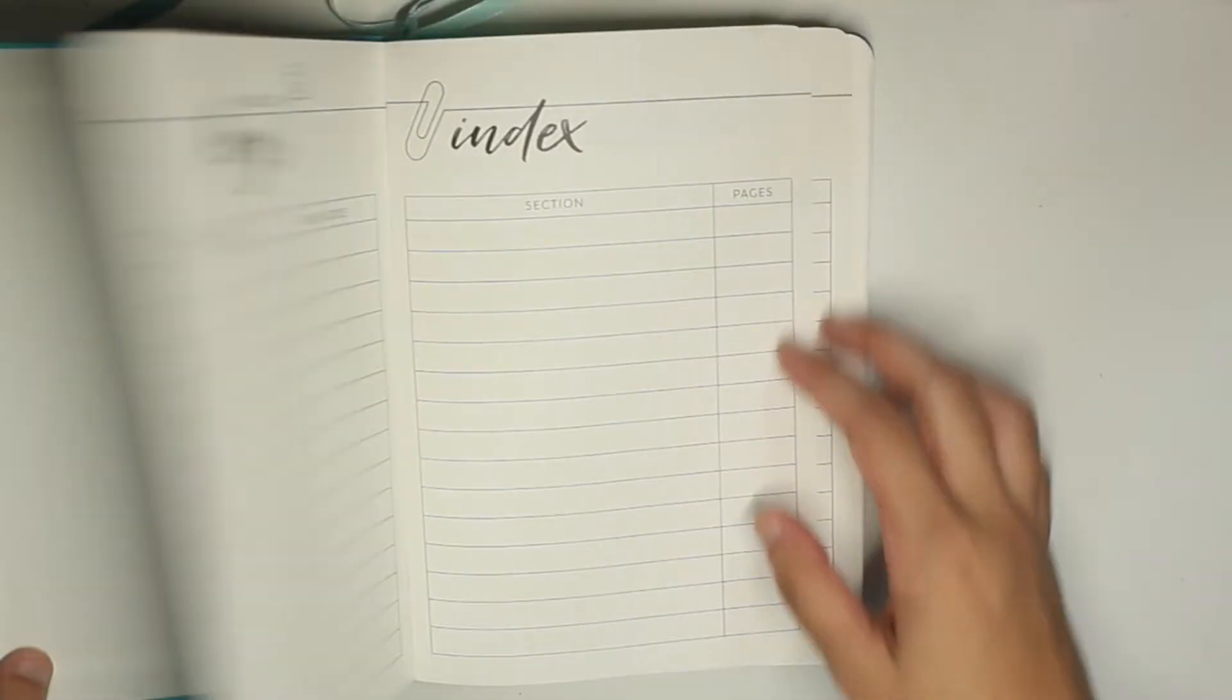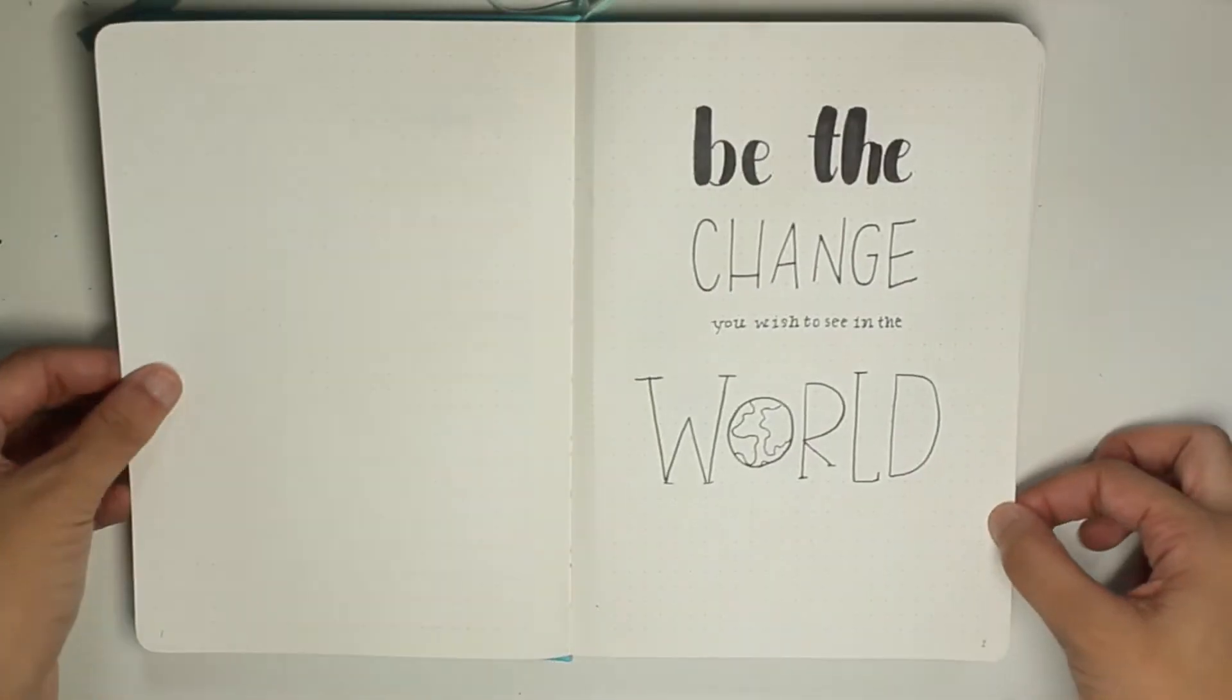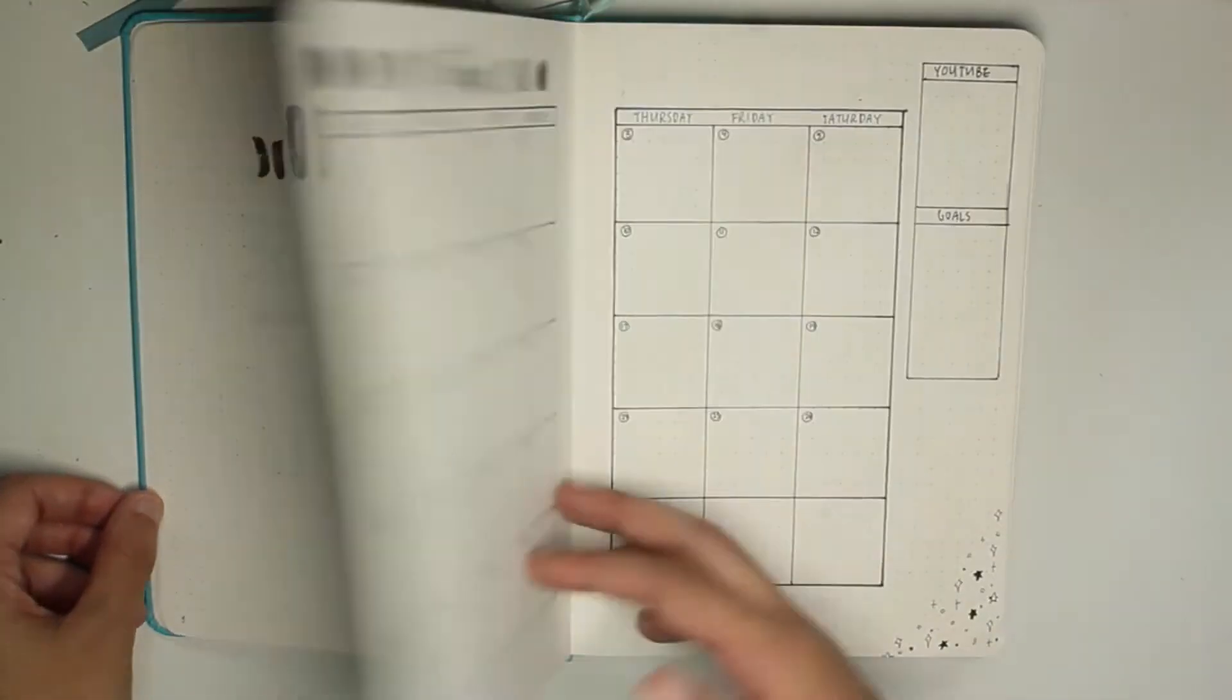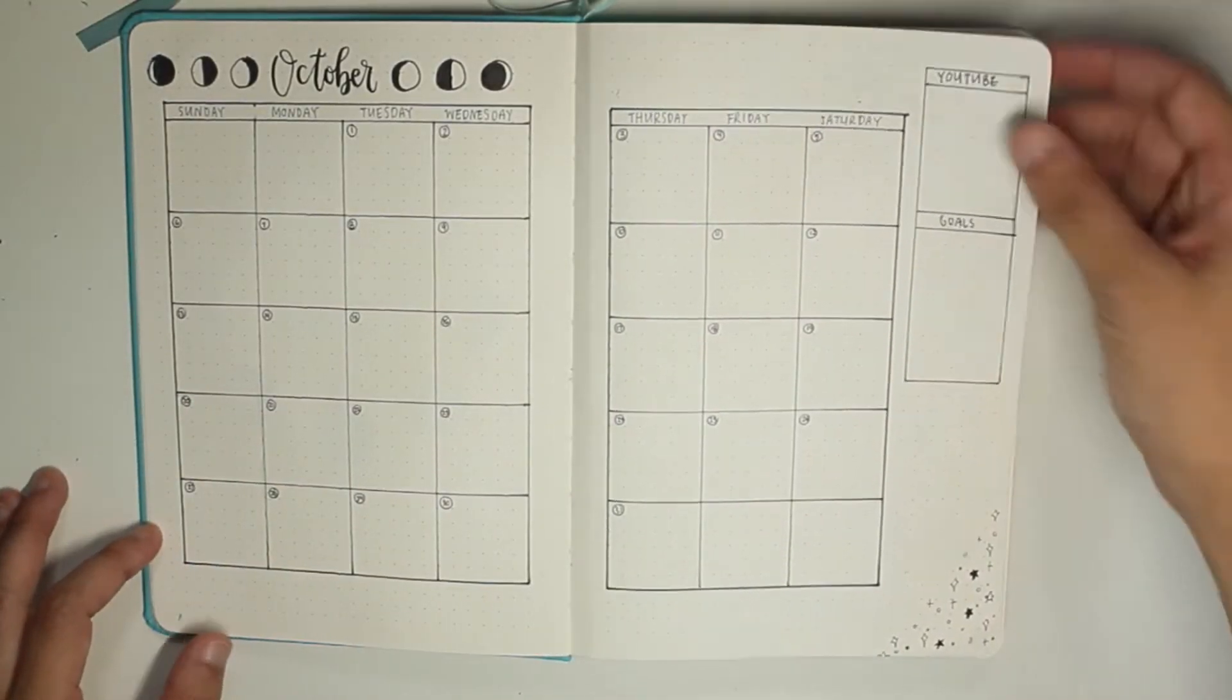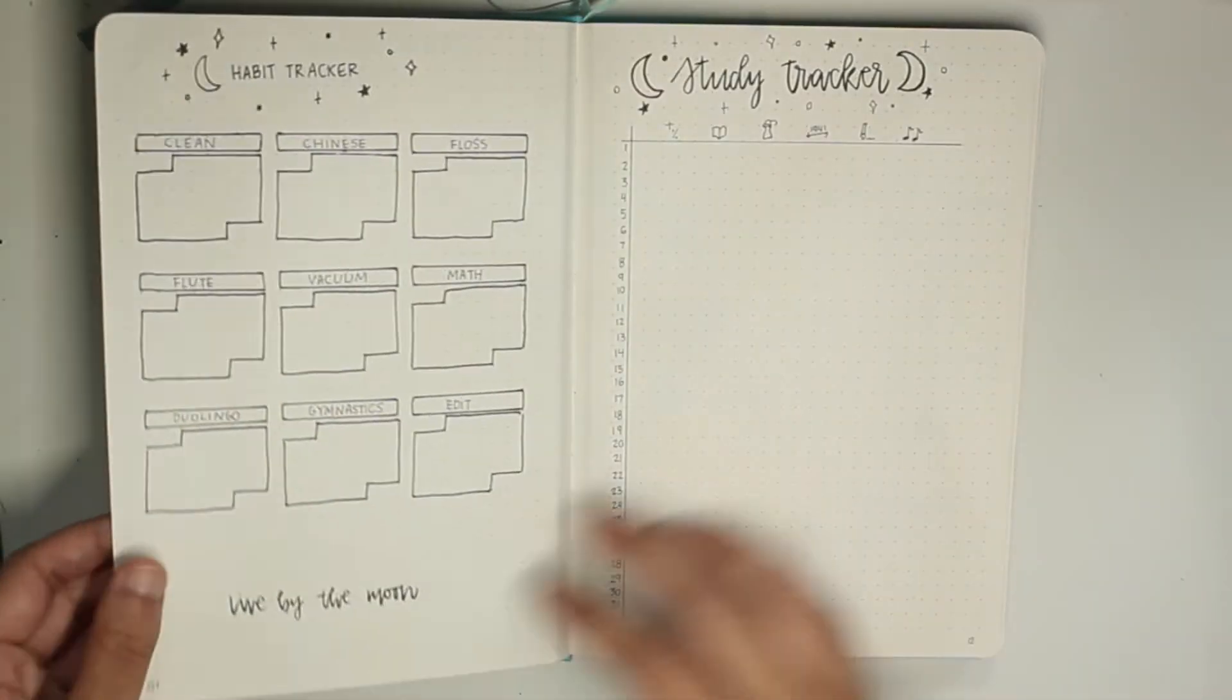Here is the final flip through for my October bullet journal setup inspired by Amanda Rach Lee. This month was so fun to make and Amanda's setup and her theme was amazing, so thank you Amanda for making your amazing videos.